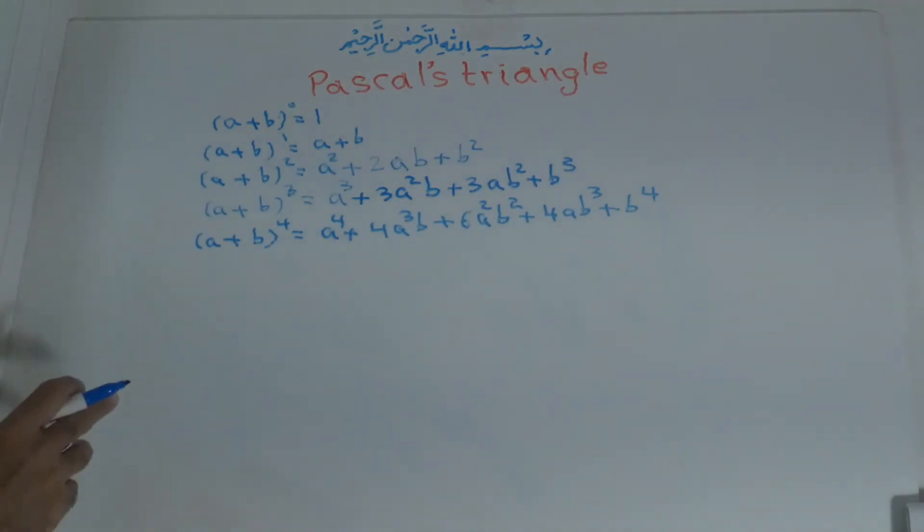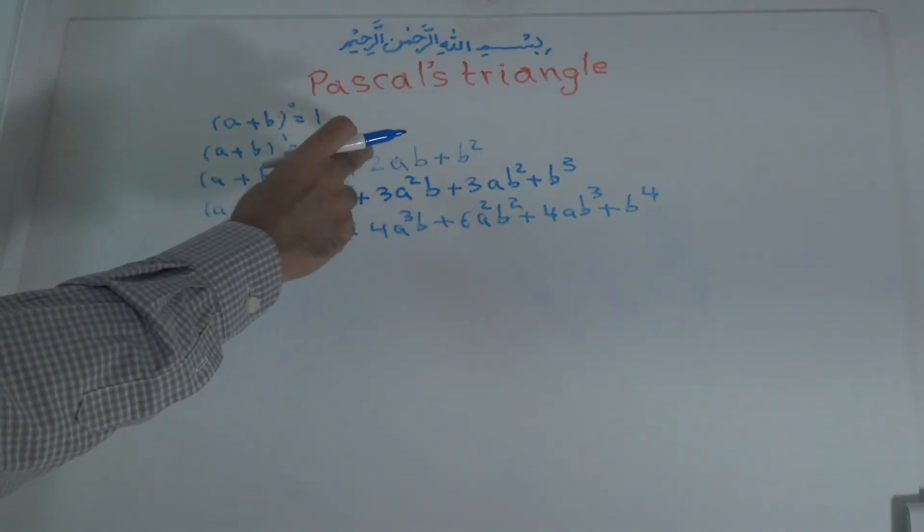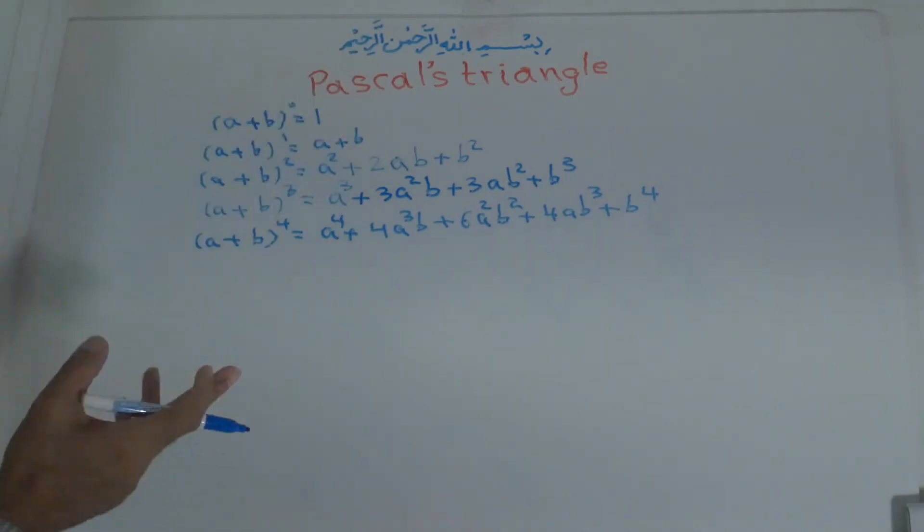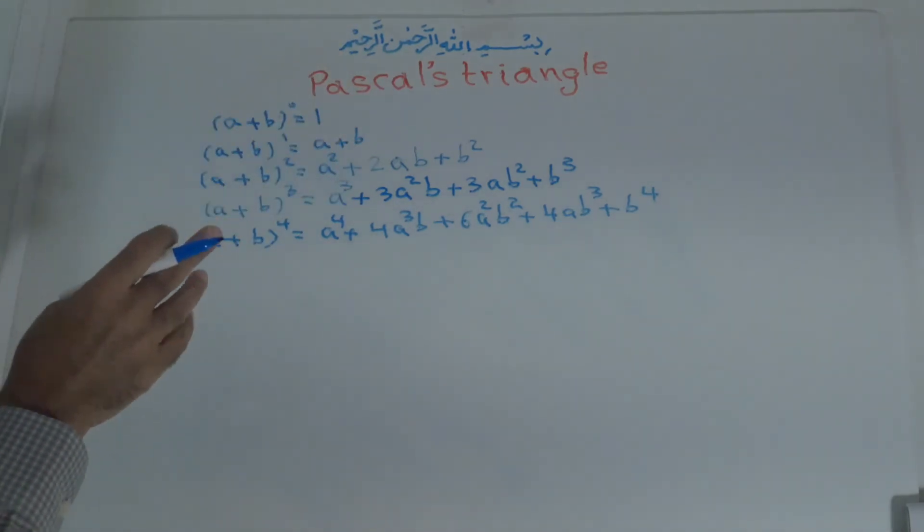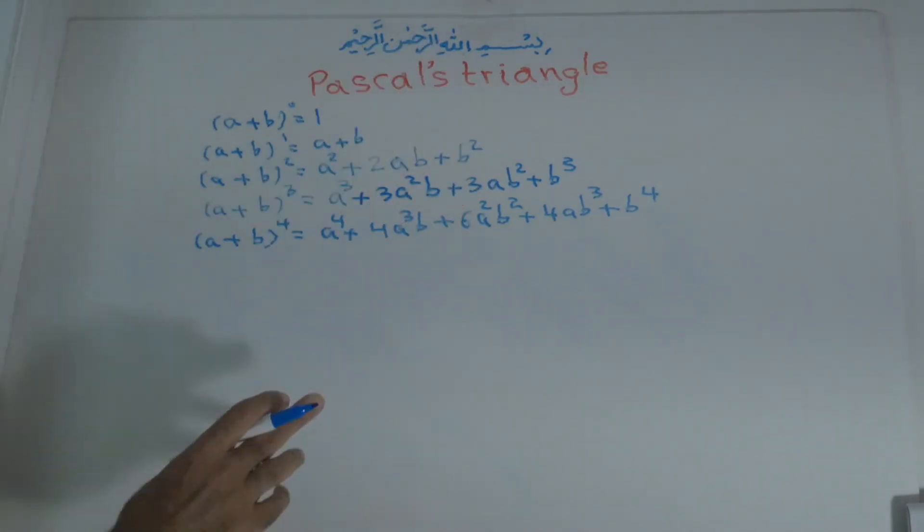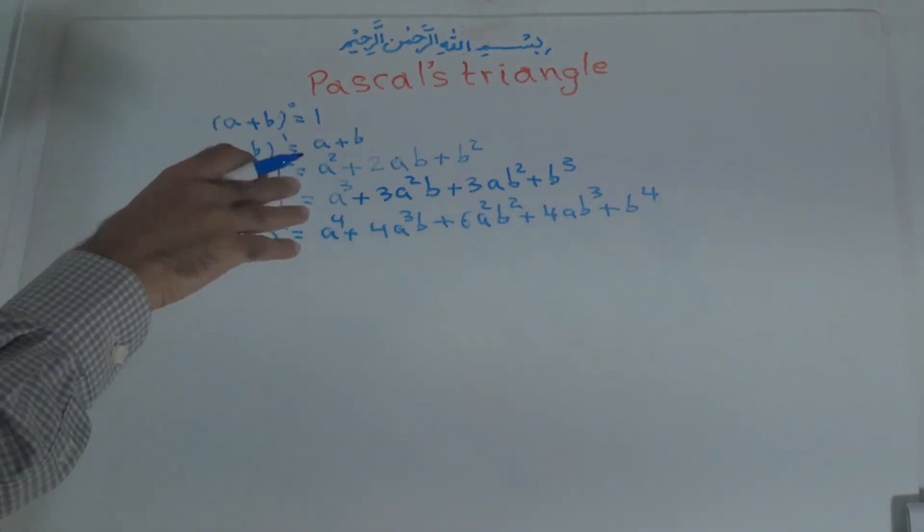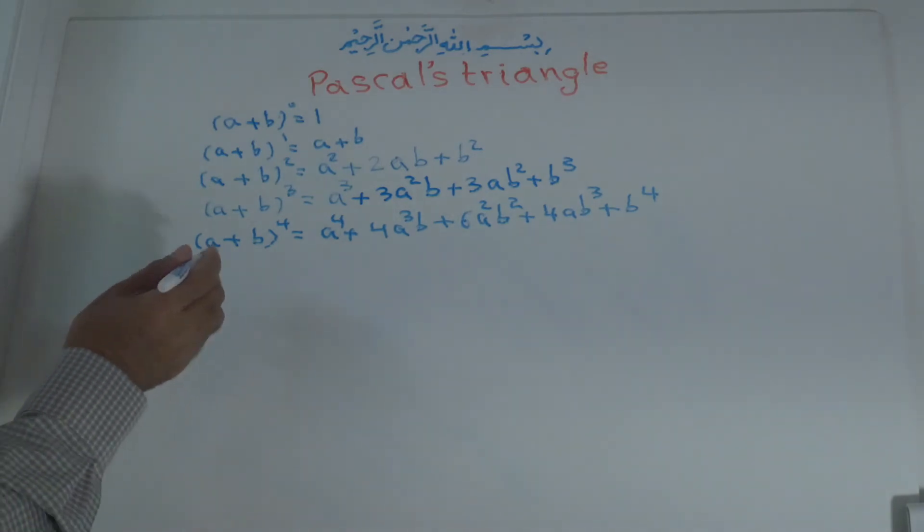Now you see the power goes 2 becomes 1 and becomes 0. Zero means it becomes 1. Here 3, 2, 1 and finish. 4, 3. And the second term power increases 1, 1, 1. Now if we write the coefficients, I draw a line here. If we write the coefficients.